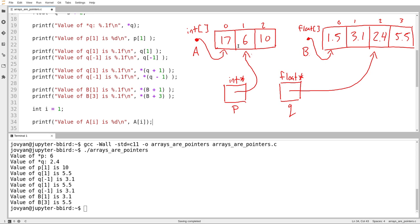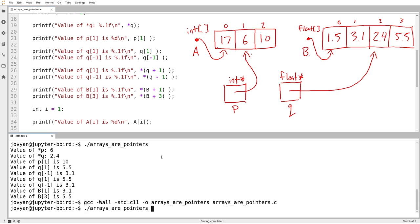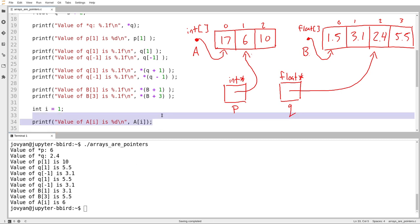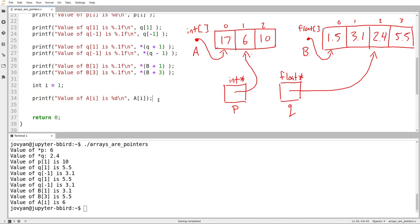So we know already, of course, this is going to be A sub 1, which will be the value 6. Now, because we're at a point in the course where it's natural to be a little bit superstitious, there it is, the value of A sub i is 6.